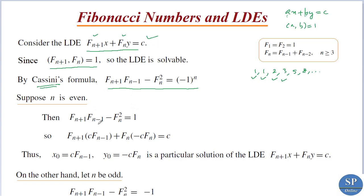So we have fn+1 times fn-1 minus fn squared equal to 1. We are going to find the solution of this LDE. Multiplying this equation by c, we get c equal to fn+1 times (c times fn-1) minus fn times (c times fn).